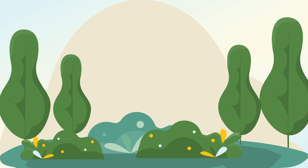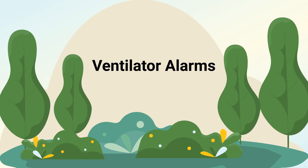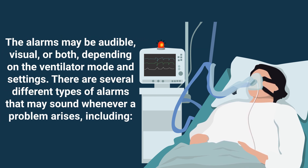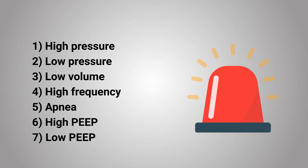That leads perfectly to the next problem: ventilator alarms. Ventilator alarms serve as a safety mechanism and use a set of parameters to provide alerts whenever a problem arises in the patient-ventilator interaction. The alarms may be audible, visual, or both, depending on the ventilator mode and settings. There are several different types of alarms that may sound, including high pressure, low pressure, low volume, high frequency, apnea, high PEEP, and low PEEP.